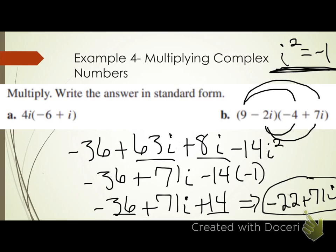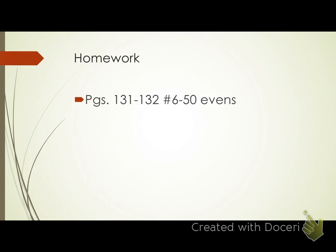Multiplying is the next easiest thing after addition and subtraction for complex numbers. If you have any questions, please feel free to email me or ask in class. For homework, pages 131 through 132, numbers 6 through 50 evens. This is due on Canvas. Talk to y'all later.